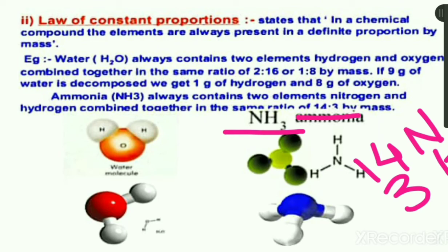In ammonia, the two elements are present in the ratio 14:3. If you take 17 grams of ammonia and decompose it, you get 14 grams of nitrogen and 3 grams of hydrogen. So the law of constant proportion states that in a chemical compound, the elements are always present in a definite proportion — in water the proportion is 1:8, and in ammonia it is 14:3.